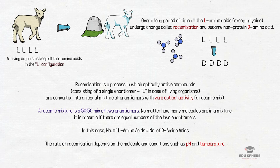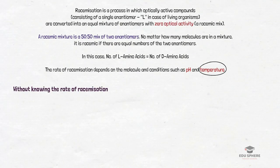So after the death of an organism, the proportion of these D-amino acids increases with time. However, the rate of racemization is temperature dependent and therefore likely to vary from site to site. So without knowing the rate of racemization of a particular place, it is not possible to determine the exact age of an object.